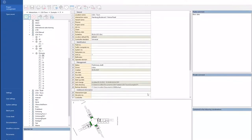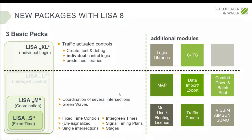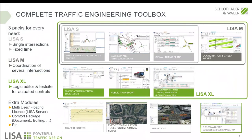Before I start with Lisa, something from Lisa 8 I would like to show is the new modules. Not everybody needs all the functionalities, so we have divided Lisa into basic packs. We have Lisa Small, which is for single intersections where you have to create just fixed signal timing plans — which I will show you in this click-along. Then you have Lisa Medium, where you can create fixed signal timing plans along with coordination and green waves, which is also very sufficient for most of the world. Then you have Lisa Excel, where you go a step further and design your own logics for traffic actuated control, and also a test site where you can check or debug your controls.